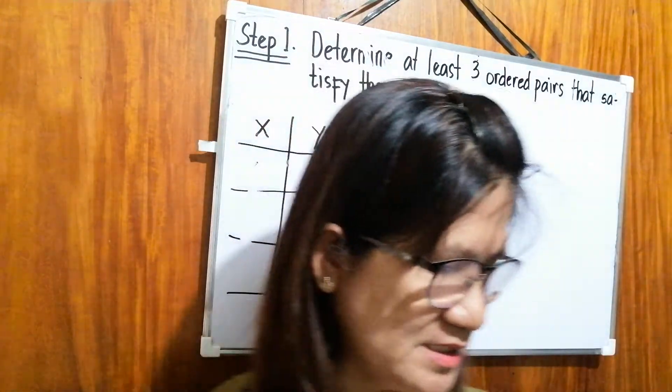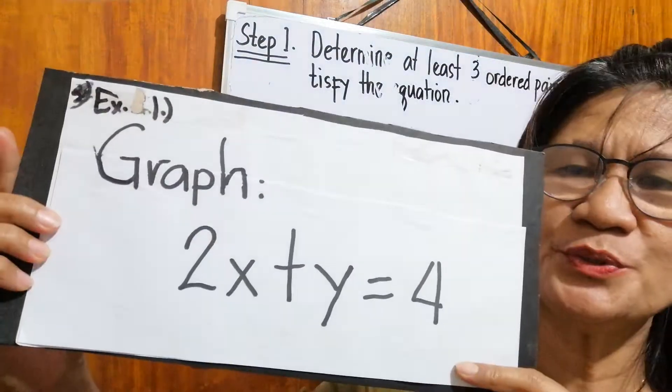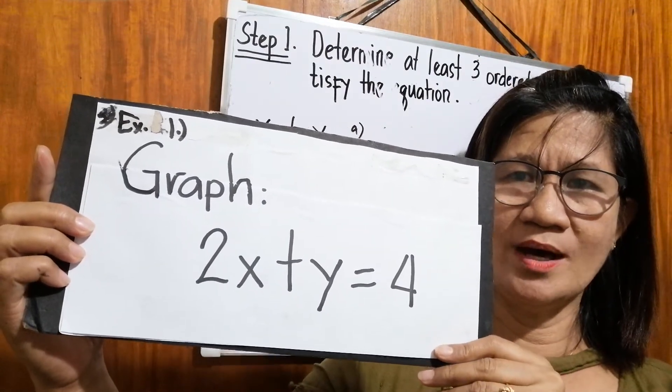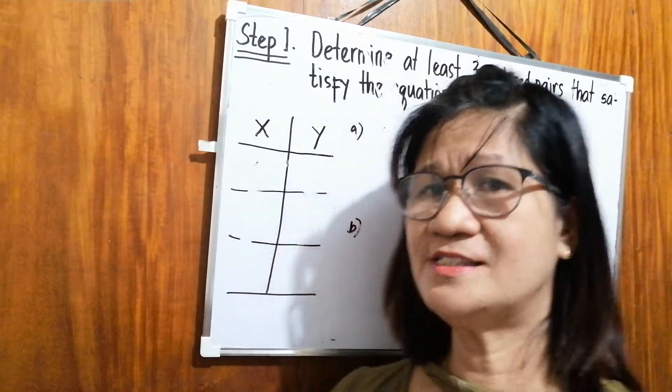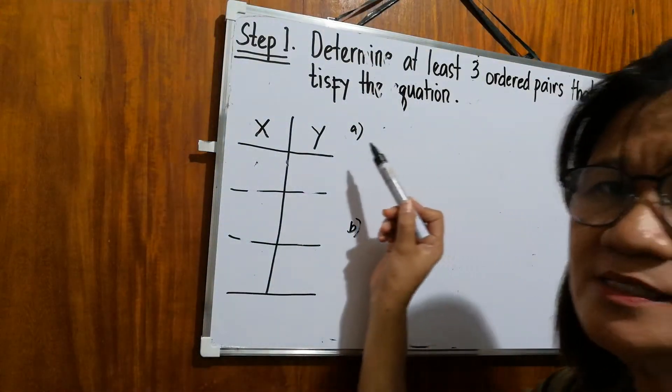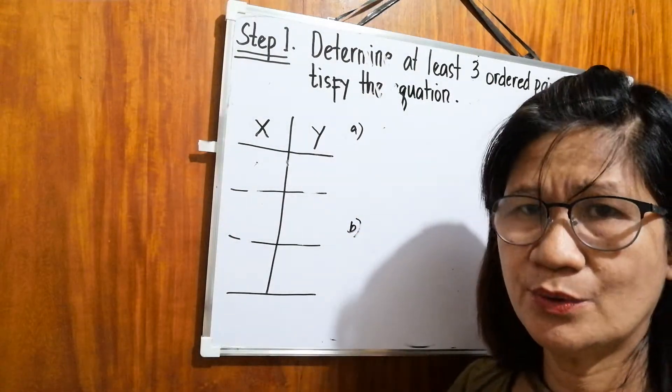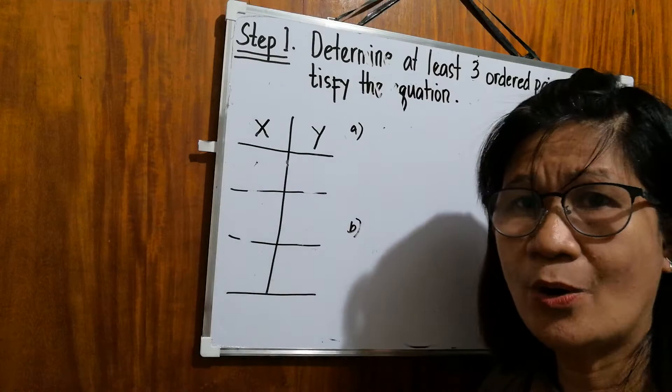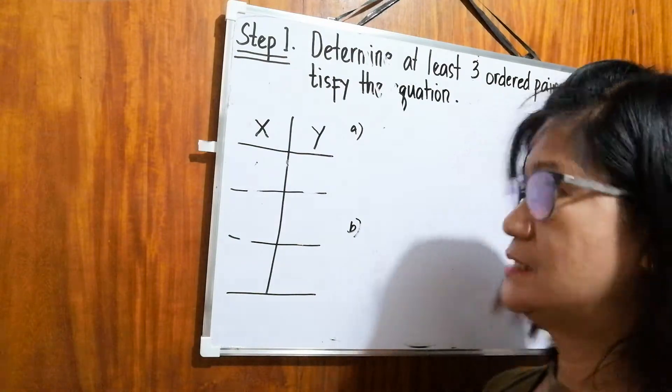Now, let's take the first example. Our first example is graph 2x plus y equals 4. So, in graphing this, the first step that you're going to do is you're going to determine at least three ordered pairs that will satisfy the equation. How? By assigning x or y.